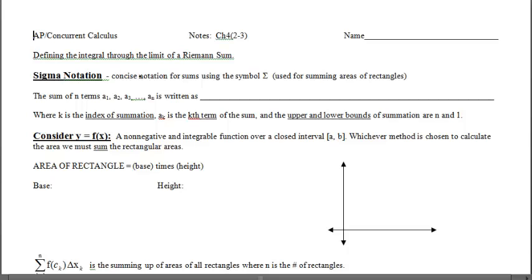Sigma notation is a concise way — concise notation — for sums using the sigma symbol. The sum of n terms a-sub-1, a-sub-2, a-sub-3, dot dot dot to a-sub-n is written using that symbol.